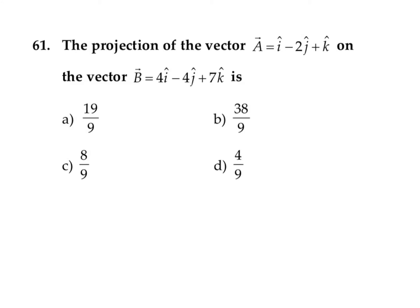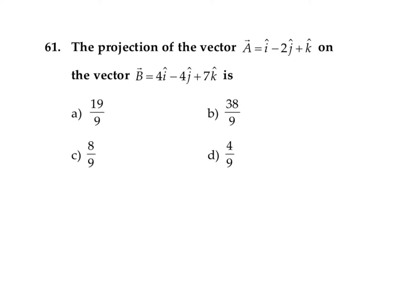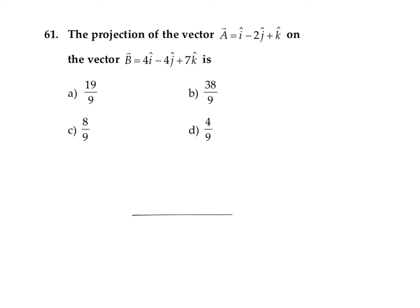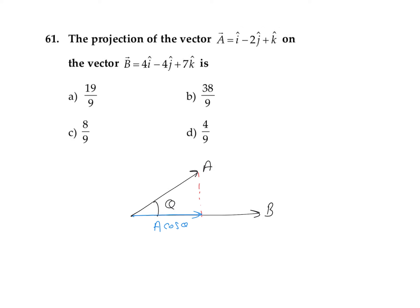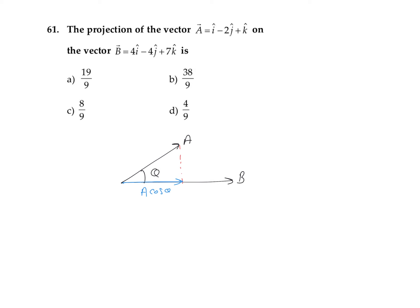Here it is given that the projection of vector a on vector b. Let us see how to find out the projection of vector a on another vector b, where the angle between them is theta. We can find out the component of a along the direction of b, which is a cos theta. This a cos theta is known as the projection, and its magnitude is known as the component. According to the given option, they have given the magnitude of that.